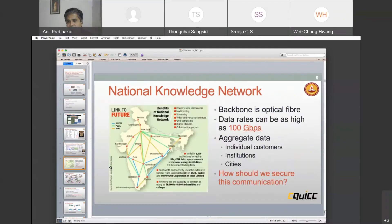Now, I am an academic and my institute is on this national knowledge network. If you see this national knowledge network, it's connected on fiber to different metros. The backbone can support data rates as high as 100 gigabits per second. It aggregates data. So the question now becomes, how should we secure this communication?